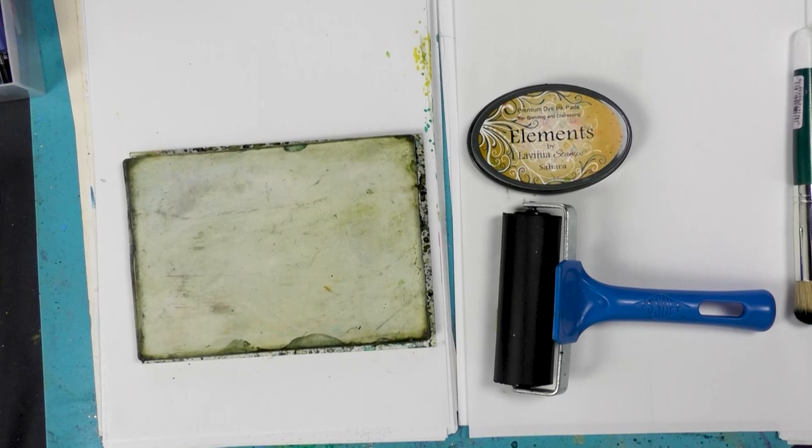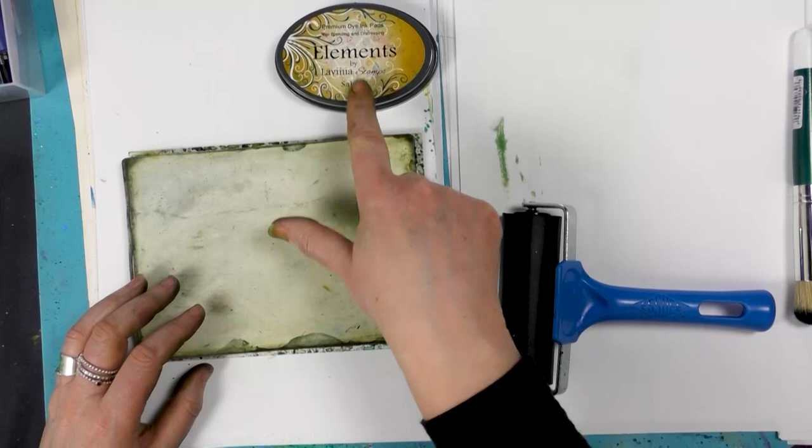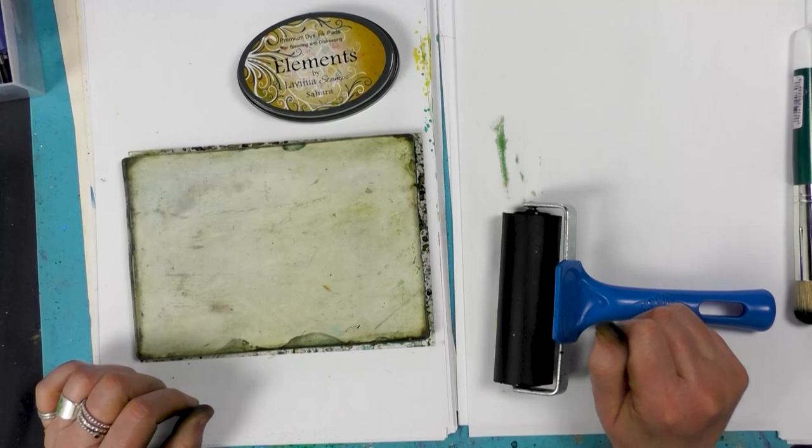Hi there guys, this is Tracey from Lavenue Stamps and thank you for joining me today for another demonstration using our brand new stamps launched this week. We've got our gel press here which I'm going to be using to create our background, and we've got elements. I'm going to be using the color Sahara. We've got some brushos and then we've got a number of different colors of the Versafine that I'm going to be stamping with.